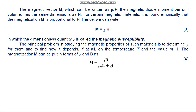The magnetization M can be put in terms of χ and B as M equals χ·B divided by μ_0·(1 plus χ) (formula 4). From this expression, if the susceptibility χ is small compared to 1, then M approximately equals χ·B divided by μ_0, and the contribution made to B by the magnetic moments — that is μ_0·M in formula 2 — is small. This applies to materials which are diamagnetic or paramagnetic.